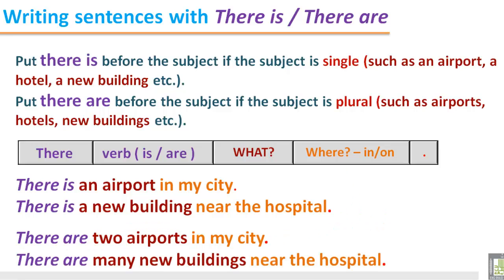Another example: There are many new buildings near the hospital. Many shows that it is a plural number - buildings. So we put there are at the beginning before the noun, before the subject. There are many new buildings. And where are the new buildings? We can find the answer: near the hospital.